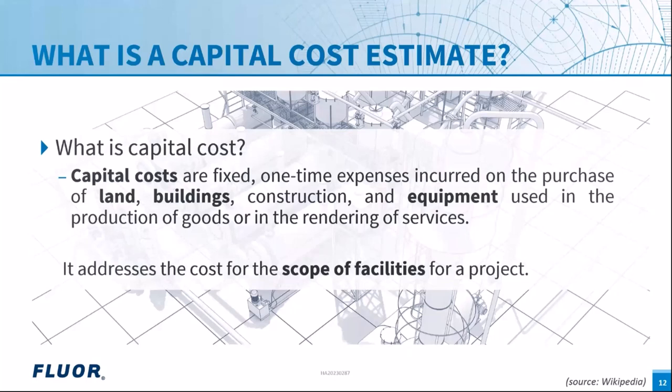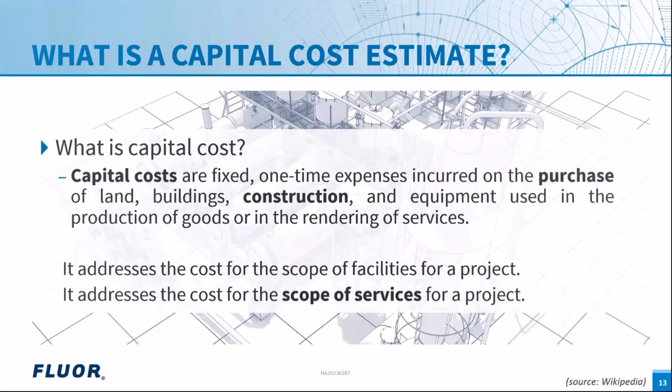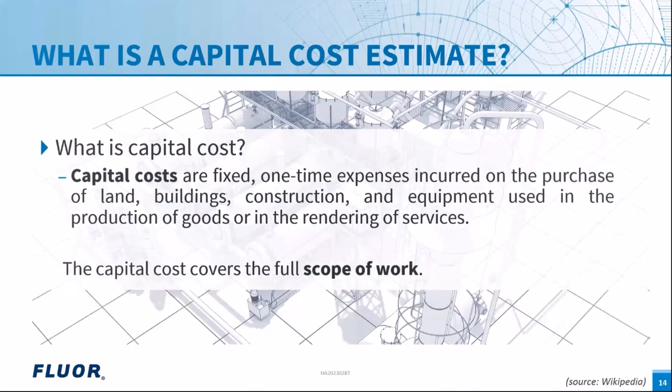But it's not only the scope of facilities addressed in this definition — there is also scope of services. We need to purchase all materials, ensure they are delivered on site at the right time, do the construction including pouring concrete, welding pipes, and installing equipment. And importantly, as an engineering company, we need to design the whole facility. Combining scope of services with scope of facilities gives us the scope of work of a capital cost investment.